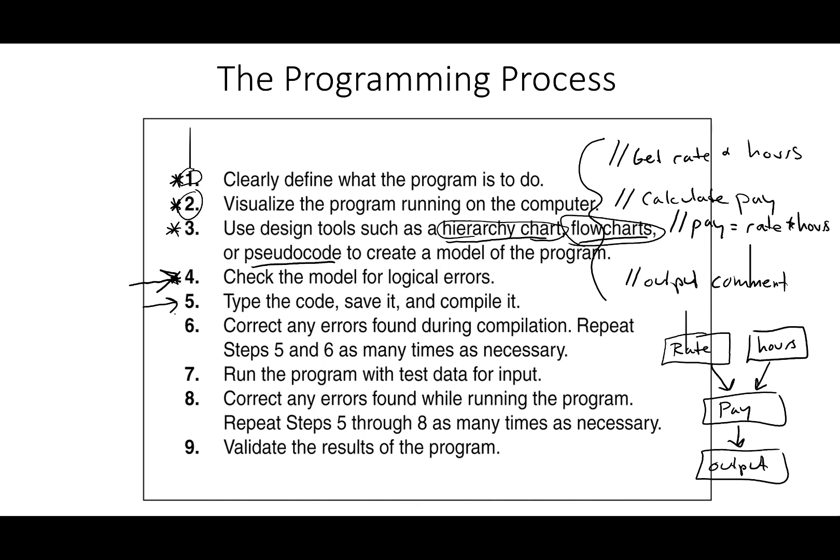Then you're going to type the code, save it and compile it. When you compile it, if you have any compilation errors - now I'm at step six - if you have any compilation errors, then you're going to go find those errors, fix them, and then you're going to go back up and type the code again, save it and compile it. No programmer types code without getting compilation errors, so don't stress about compilation errors, just fix them and move on.